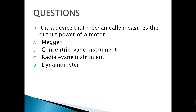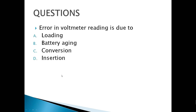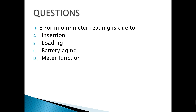A device that mechanically measures the output power of a motor — the answer is dynamometer. The error involved in a meter reading is due to letter A — loading effect error. The error in an ohmmeter reading is due to battery aging.